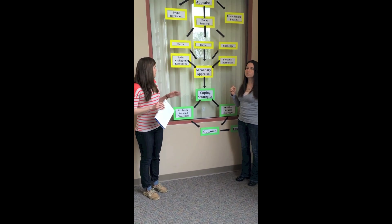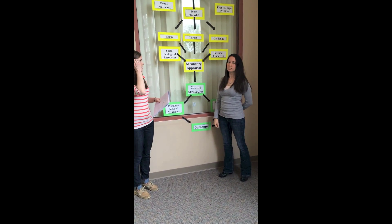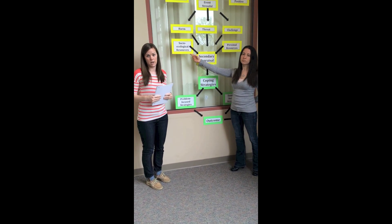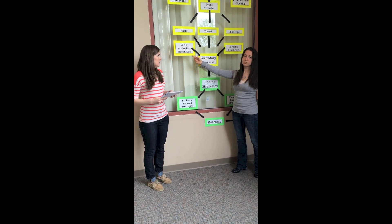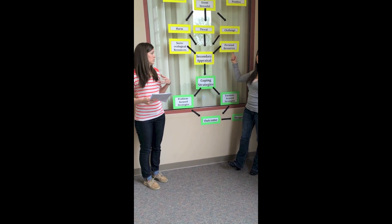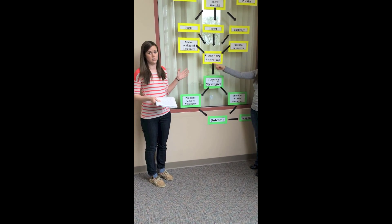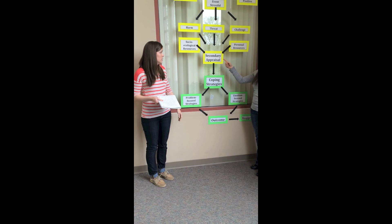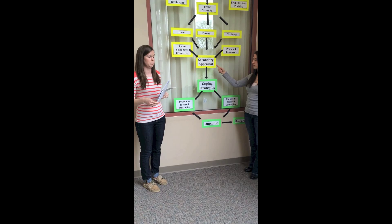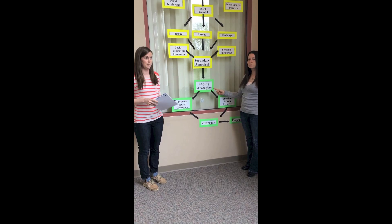An individual also focuses on what type of resources they have to help them through the stressful situation. Socio-ecological resources would be things like money and special training that an individual has, whereas personal resources are more things like social support or religion — things that the individual can rely on to help them get through the situation. All these factors go into secondary appraisal, where the individual pulls their resources together to come up with coping strategies.